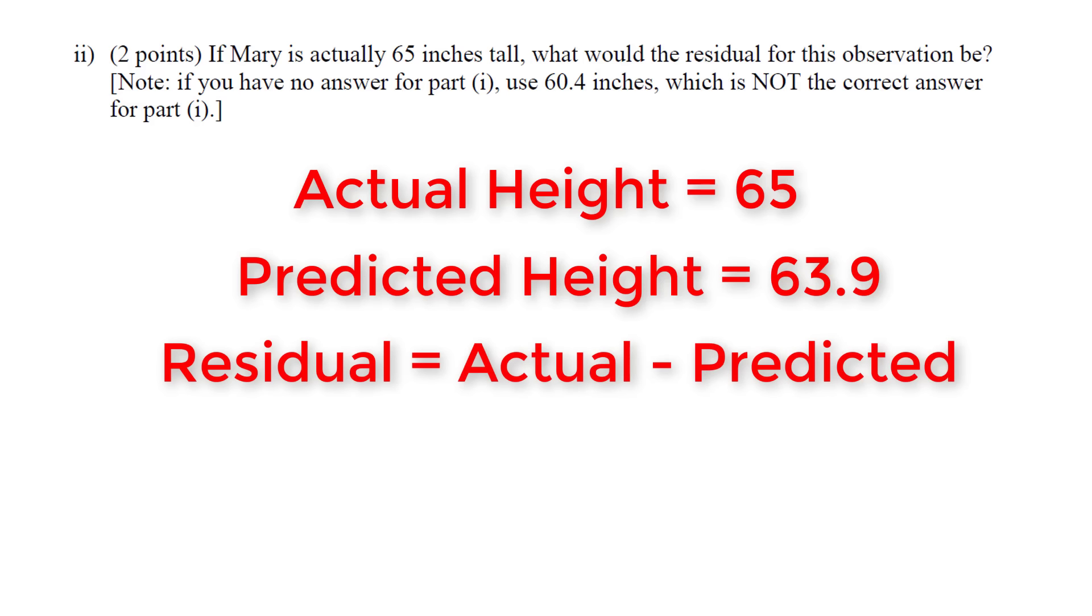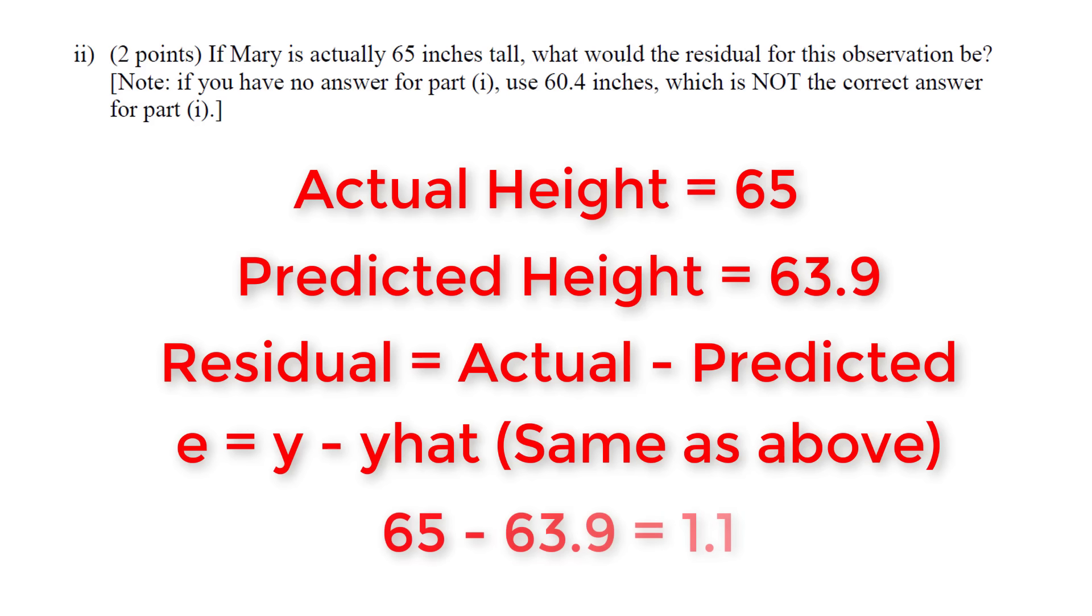You should memorize: residual equals actual minus predicted. We can write this as e = y - ŷ, because y is actual and ŷ is predicted. Solving with actual minus predicted: 65 - 63.9, since we predicted 63.9 and she's actually 65 inches tall.